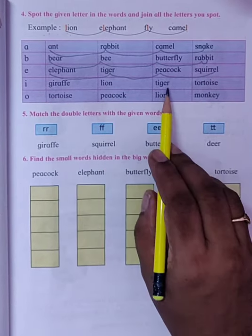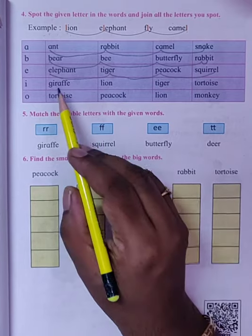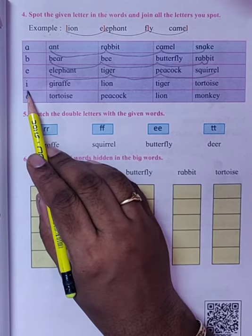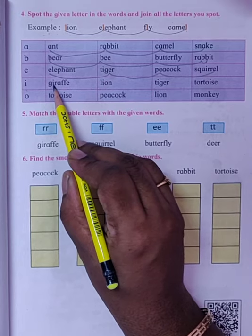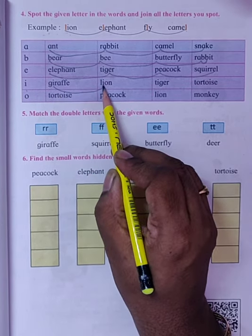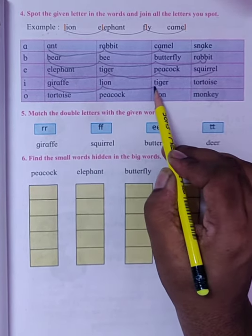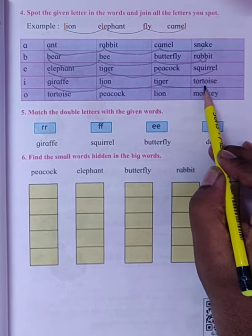Giraffe, Lion, Tiger, Tortoise. Here they have asked us to join I. So the I of Giraffe we will join with I in Lion, the I in Tiger, and the I in Tortoise.